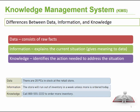For example, looking at the section at the bottom: data could be classified as a number — 20, a product, and then perhaps a database. Information would be that the store will run out of inventory in the week unless we order more. And the knowledge is that if we need to order inventory, we need to call a specific number to contact our supplier, and then they will come and restock our products.